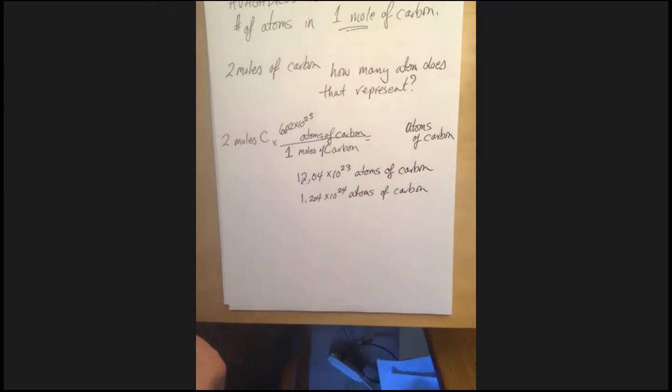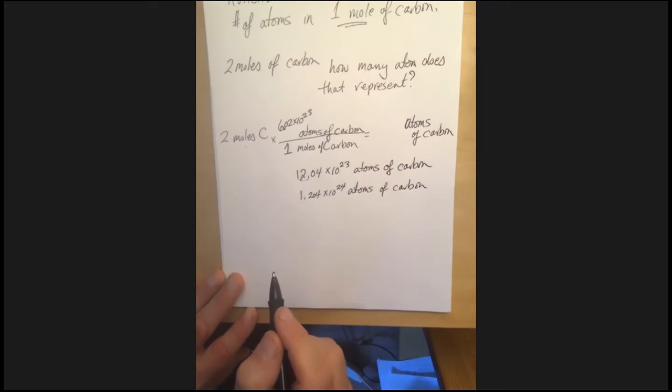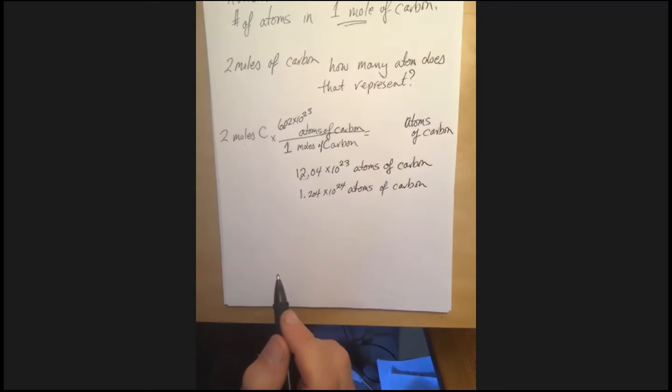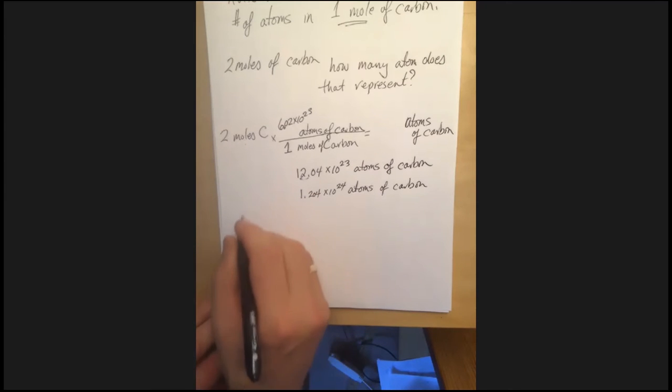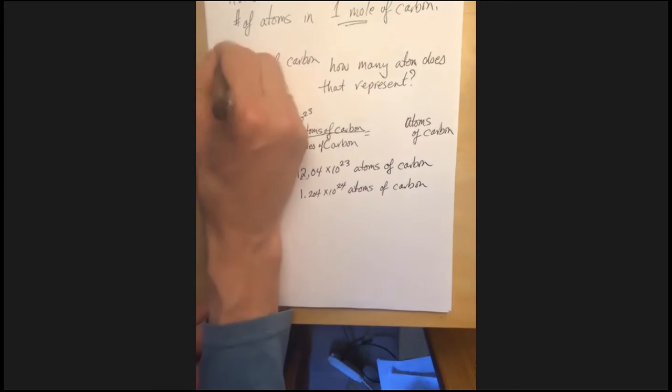What do you think? Okay. That makes sense. But you wrote on the top that the Avogadro's number is the number of atoms in one mole of carbon. Is it only used for carbon? That's an excellent question. It's defined as the number of atoms in one mole of carbon, but then we can use it for lots of other things.